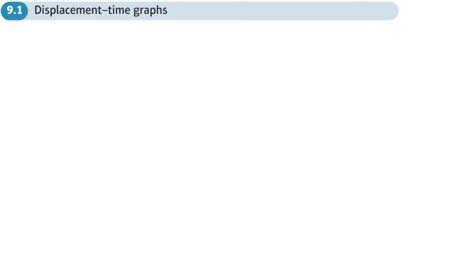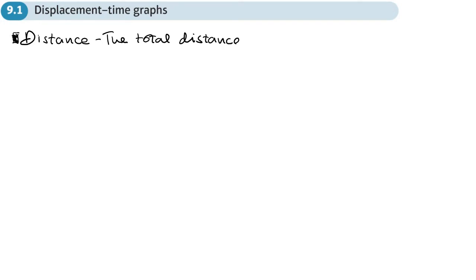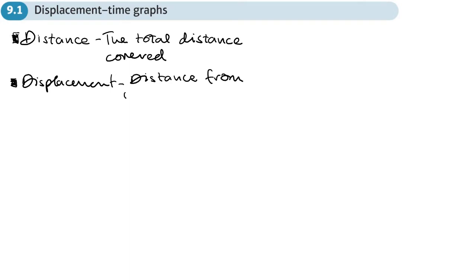This is the first section of chapter 9 on constant acceleration from the Year 1 Stats and Mechanics book, covering displacement-time graphs. Before we start, let's clarify the difference between distance and displacement. Distance is the total distance covered, whereas displacement is the distance from your starting position. It's important we know the difference. For example, say I start at point A and move 10 meters.